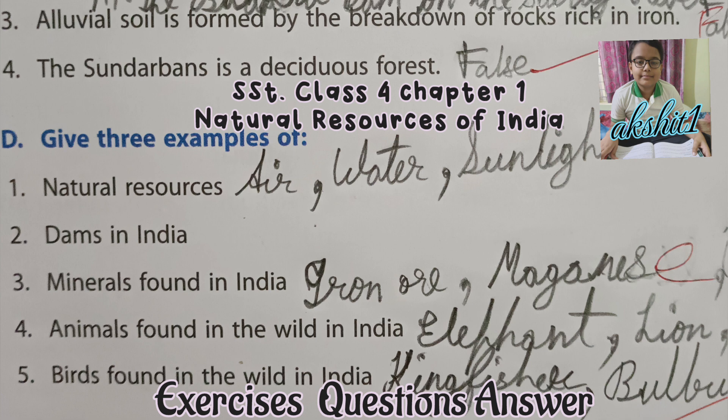Red soil is formed by the breakdown of rocks rich in iron, not alluvial soil. Alluvial soil is the most fertile soil; it is formed by the deposition of silt brought down by the rivers. Fourth, the Sundarbans is a deciduous forest — it is also false. The Sundarbans is a tidal forest.